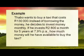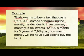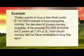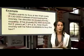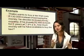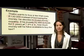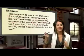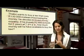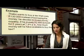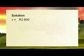Example: Taboo wants to buy a taxi that costs 130,000 rand. Instead of borrowing the money, he decides to invest the money monthly — 2,800 rand a month for five years at 7.9% interest. How much money will he have available to buy the taxi? It's important to read your question: he decides to invest, which tells us it is future, so we use the F formula. We extract the variables: monthly payment X = 2,800 rand; interest rate I = 7.9%; and time period N = five years.